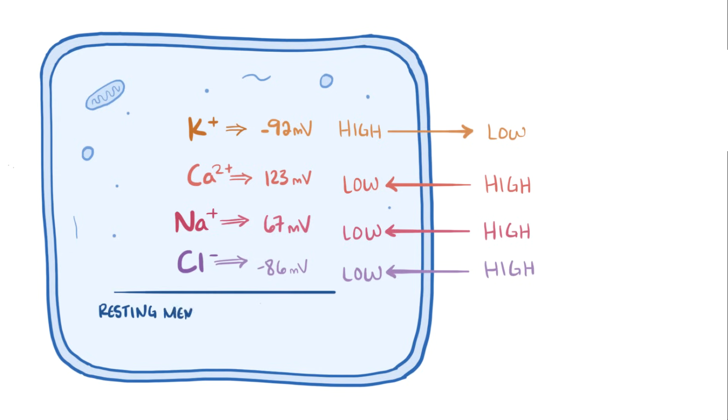Alright, so the actual resting membrane potential of the cell will end up being somewhere in between all these individual membrane potentials, depending on how much of each of these ions is moving across the membrane at a given time. This differs depending on the cell that we're talking about, but in general potassium makes up the biggest proportion of ions moving across the membrane, while the other 3 have way less moving across at any given time.